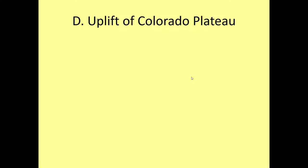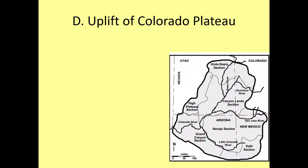Another thing that occurred as a result of some shallow subduction of the Cocos Plate is the uplift of the Colorado Plateau. Here is a map of the southwestern United States showing the four-corners region of Utah, Colorado, New Mexico, and Arizona. The region outlined in black is the Colorado Plateau. There are tons of national parks along the Colorado Plateau: the Grand Canyon, Zion National Park, Bryce Canyon, Capitol Reef, Arches, Canyonlands, Monument Valley, Glen Canyon Dam, and Petrified Forest National Park.